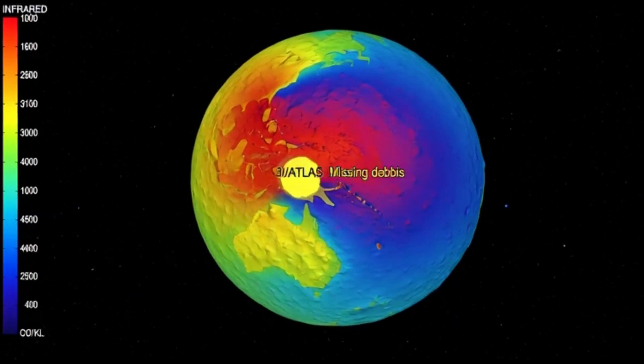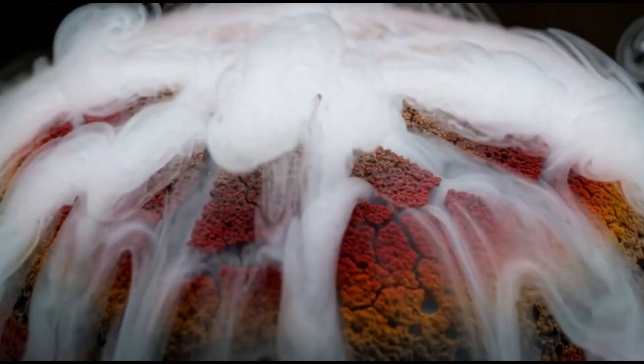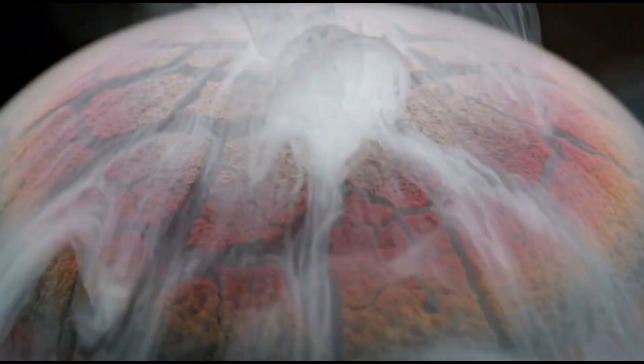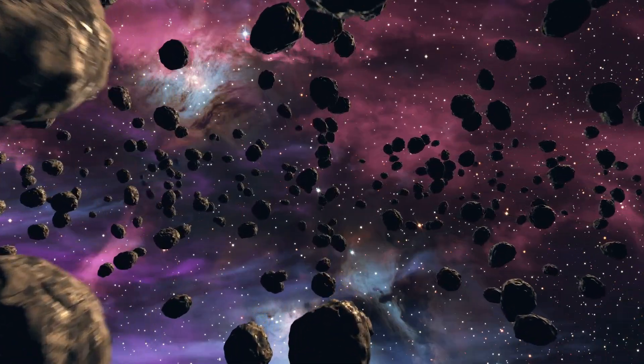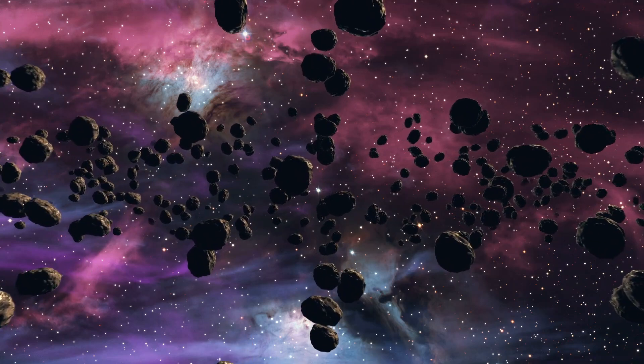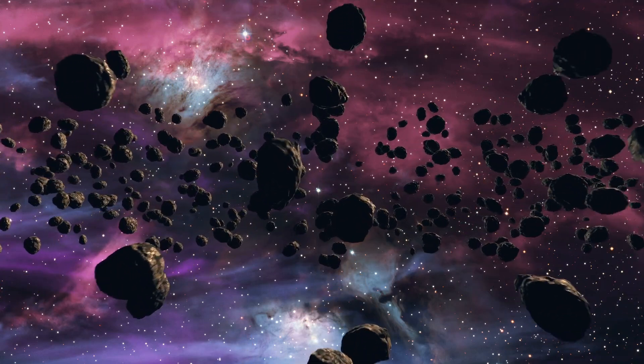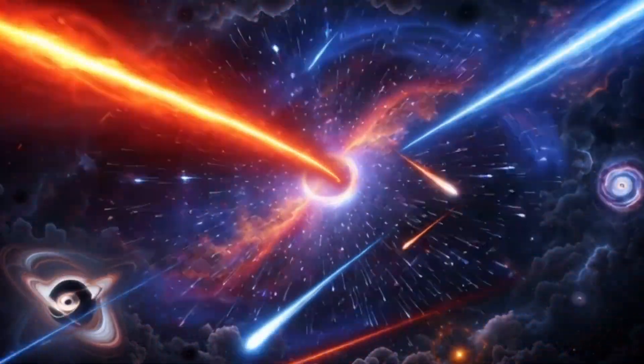But 3i Atlas broke that rule too. Spectral data came in showing a strong, clean signature of nickel, glowing in the gas around the comet. But iron? Nearly invisible. Either too weak to pick up, or simply not there. And if that reading was real, it would be the first time astronomers had ever seen this kind of imbalance.